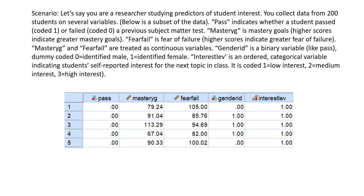So the scenario for our examples involves student-level data, and what we're going to be doing is trying to predict student interest for the next topic in class as a function of several variables. First, pass is basically an indicator of whether a student passed or failed a previous subject matter test. Pass is a binary variable coded 0 for failed and 1 for passed. Gender identification is coded 0 for male-identified and 1 for identified as female. Then we have measures of mastery goals and fear of failure, and both of those variables are treated as continuous.